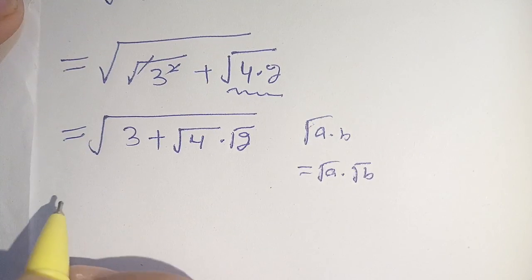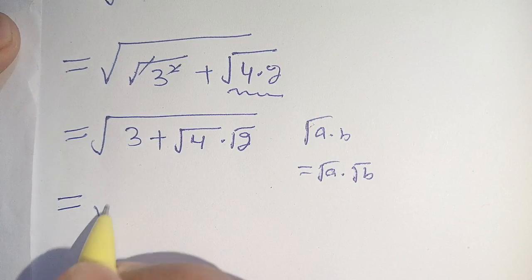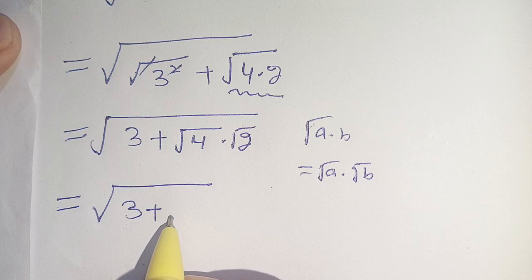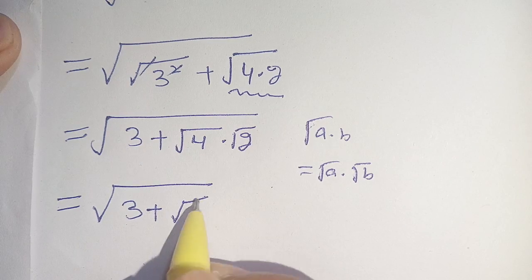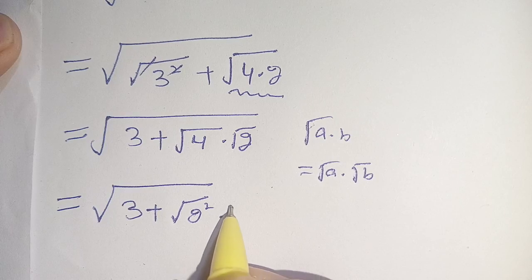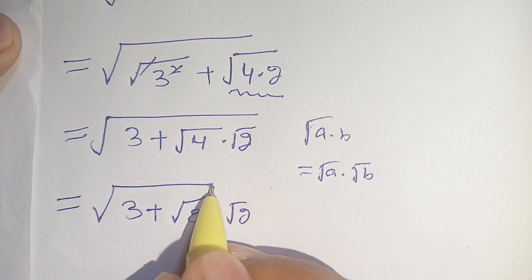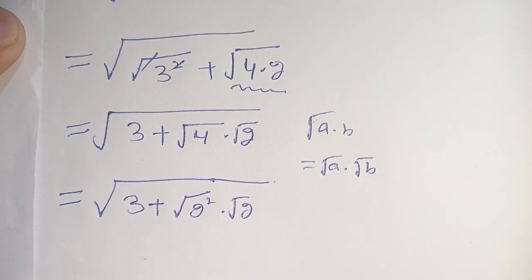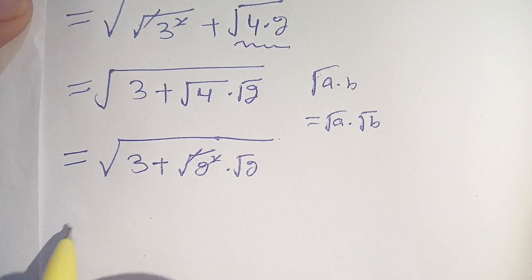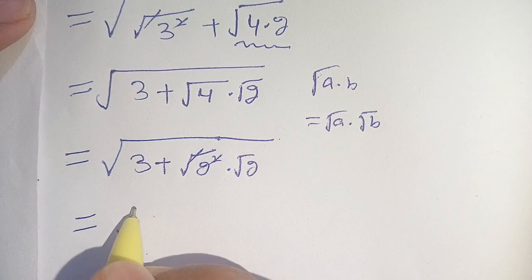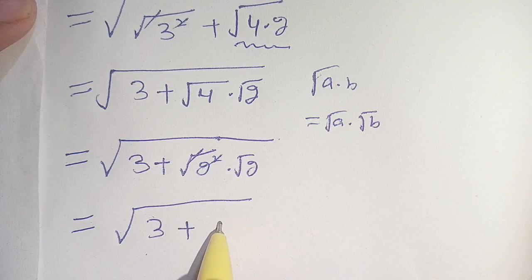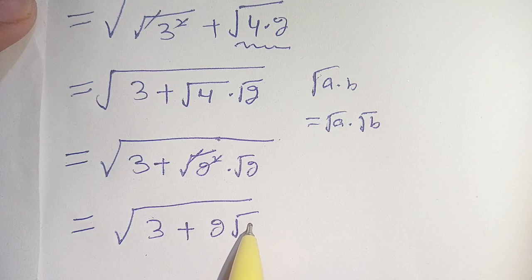In the next step, we can write square root of 4 as 2 squared. So we have square root of 3 plus 2 squared times square root of 2. We can cancel out this square by the square root, giving us square root of 3 plus 2 square root of 2.